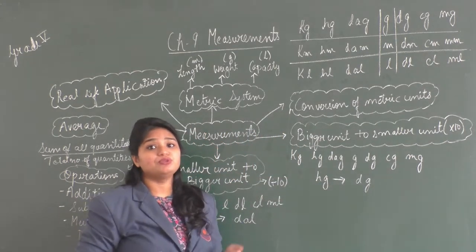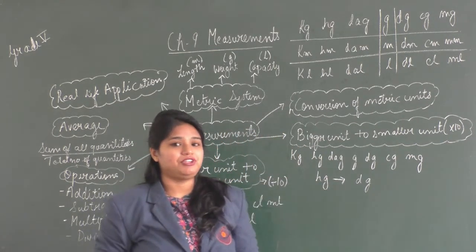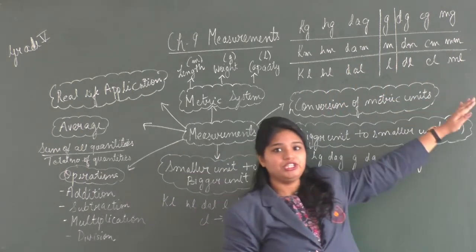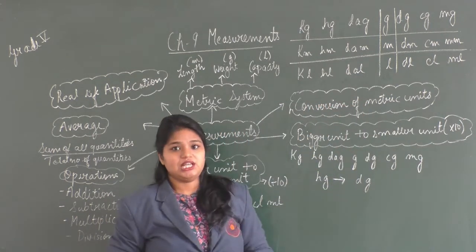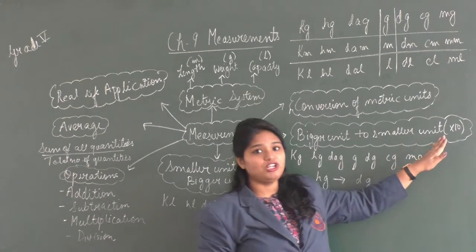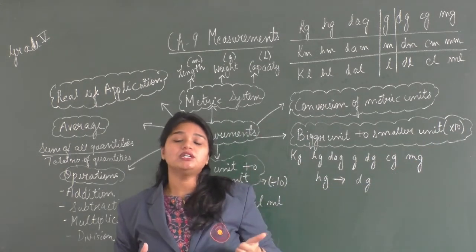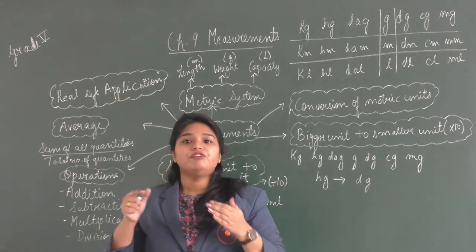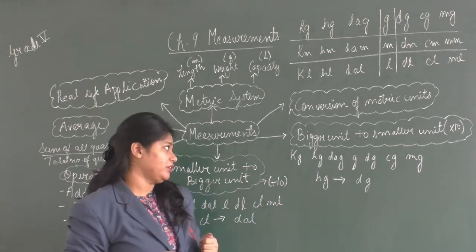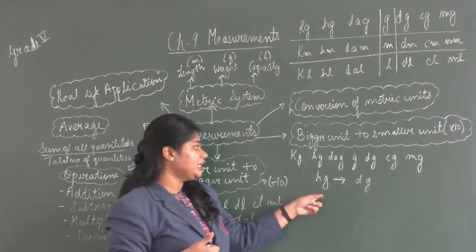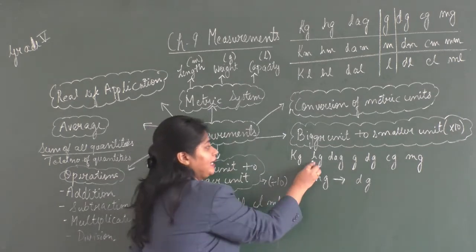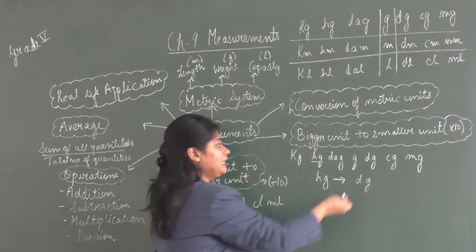Further, we learned how to do the conversion of these metric units — conversion of bigger units to smaller units, and smaller units to bigger units. When you have to convert a bigger unit into a smaller unit, we multiply by 10 for every jump we take towards the smaller unit. For example, we need to convert hectogram to decigram. We know that hectogram is a bigger unit than decigram.